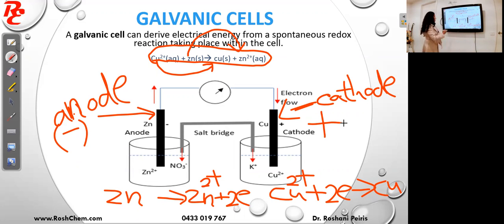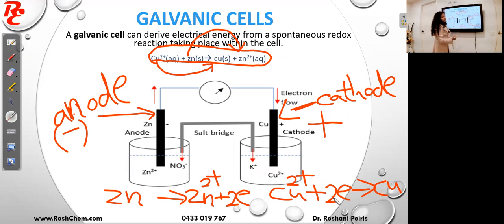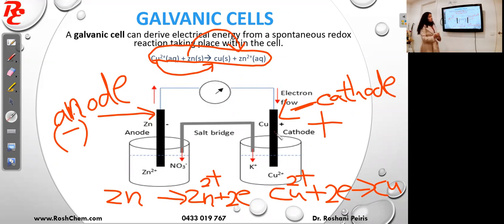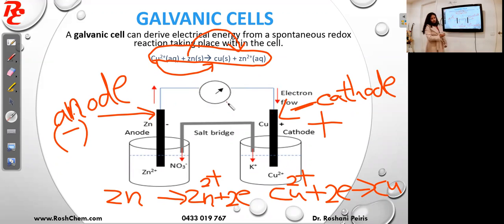In one half cell electrons are produced — zinc makes electrons — and copper 2+ takes those electrons. The electrons transfer from one half cell to the other through the external circuit, moving from the zinc electrode to the copper electrode through a wire. When electrons move externally like this it generates electricity and the voltmeter will show a reading.